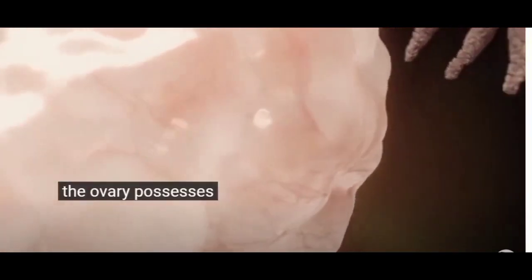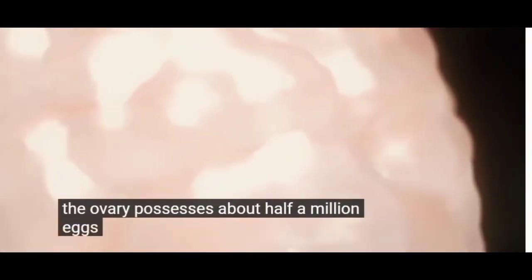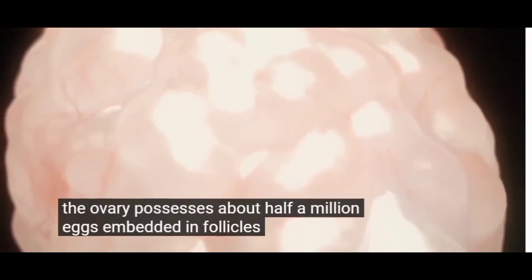The ovary possesses about half a million eggs embedded in follicles. Several follicles, and therefore eggs, mature in each cycle.